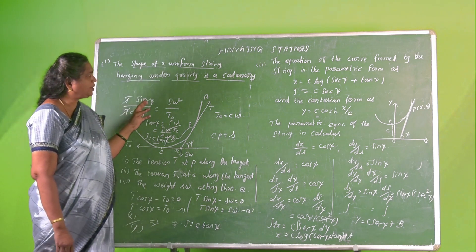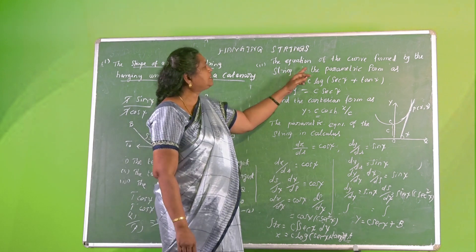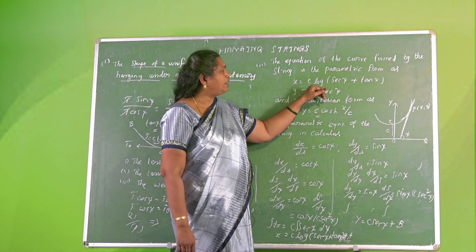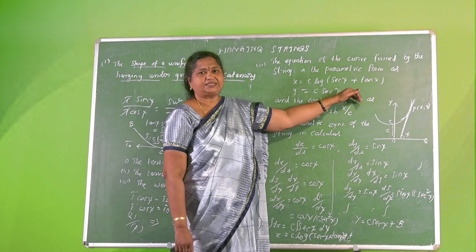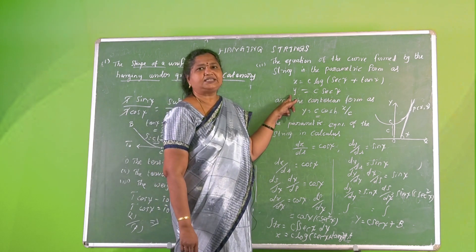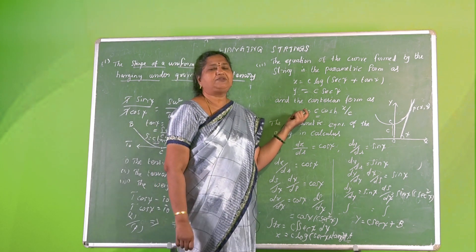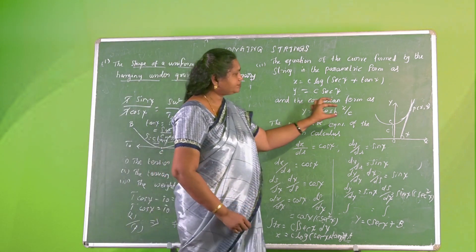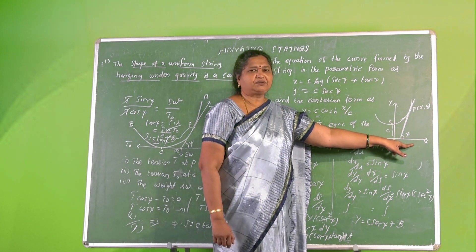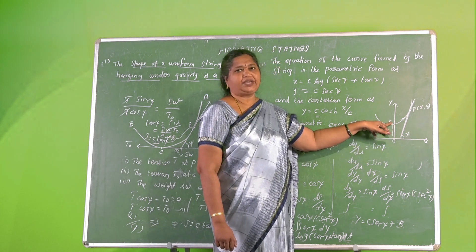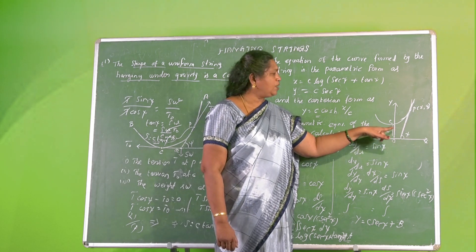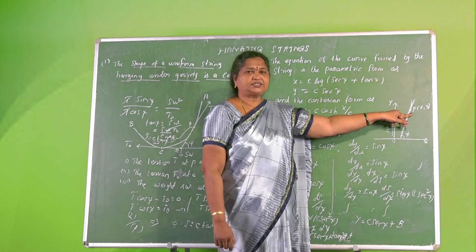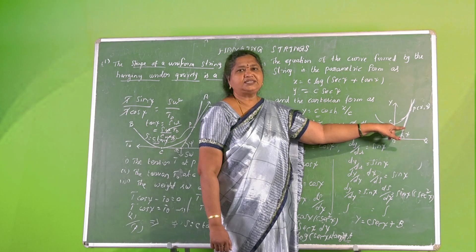Next, we find the equation of the curve in parametric form: X = C log(sec ψ + tan ψ) and Y = C sec ψ, and in Cartesian form: Y = C cosh(X/C). Here X and Y axes are perpendicular, C is the lowest point, the distance from origin O to C is small c, and P is a point with coordinates (X, Y) where ψ is the angle of the tangent.